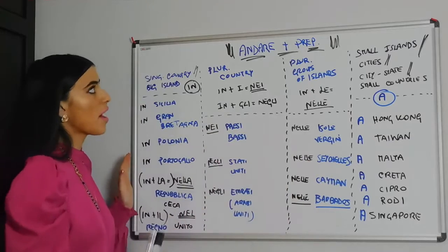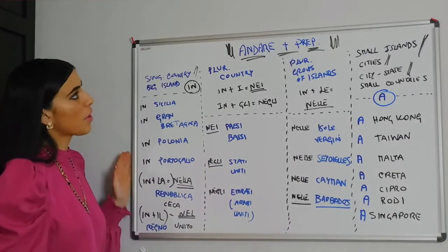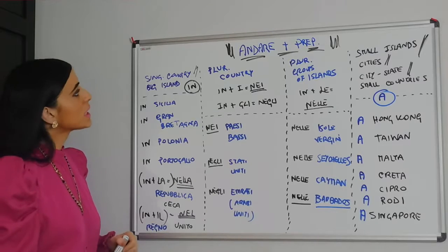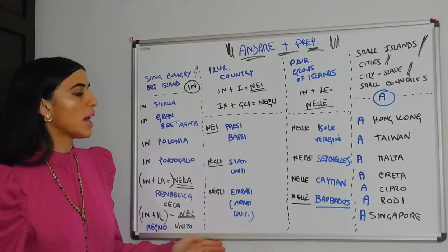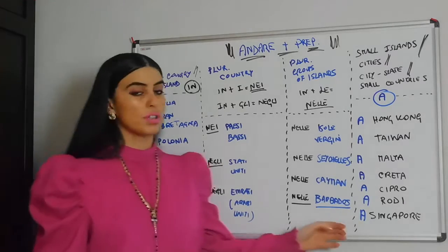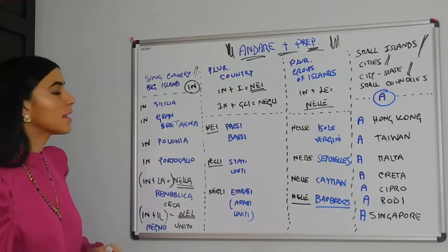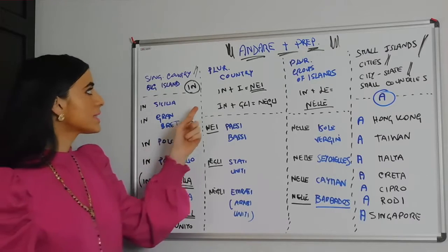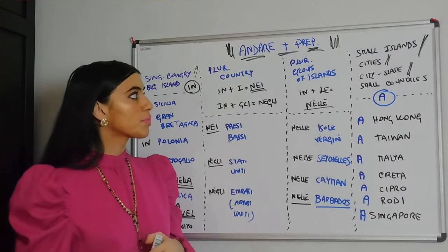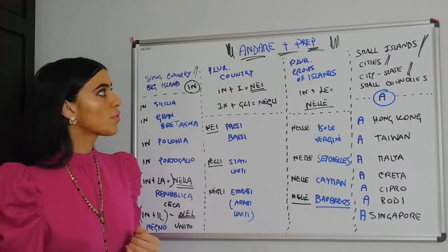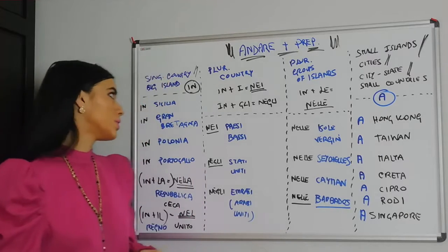This is the andare chart — andare plus preposition. I have drawn three vertical lines, which means four different columns. The first one is singular countries and big islands. The second one is plural countries. The third one is plural groups of islands. And the fourth one is small islands, cities, city-states and small countries.